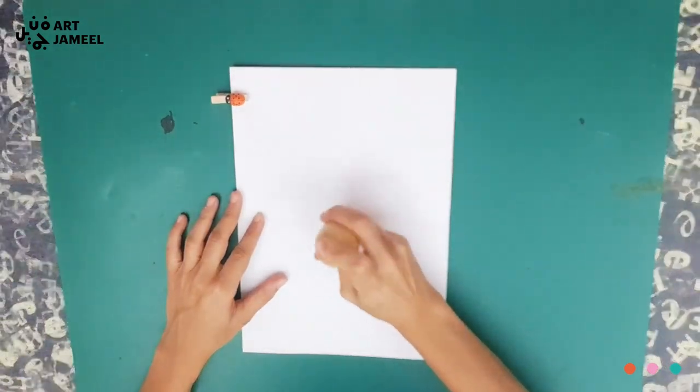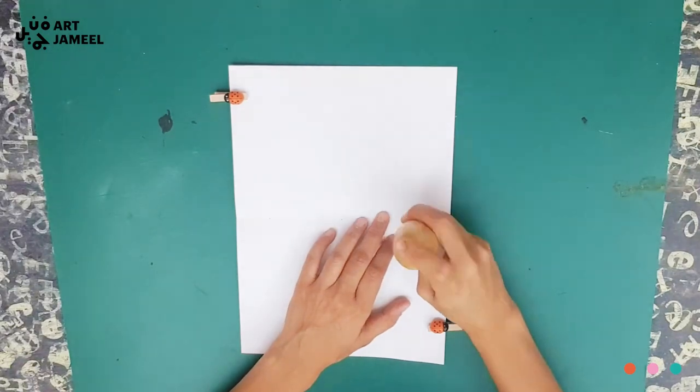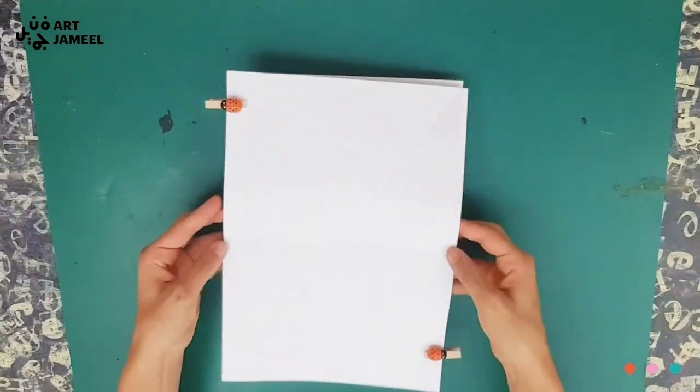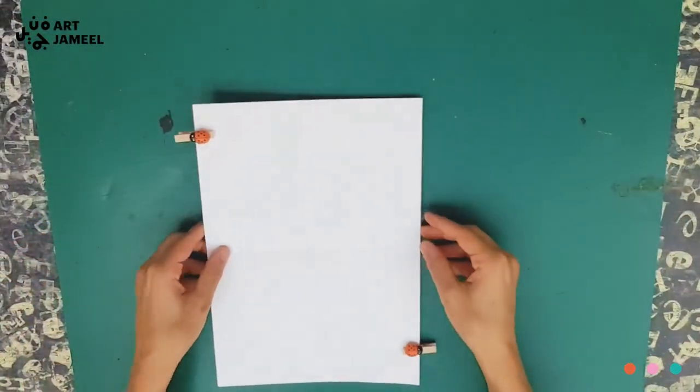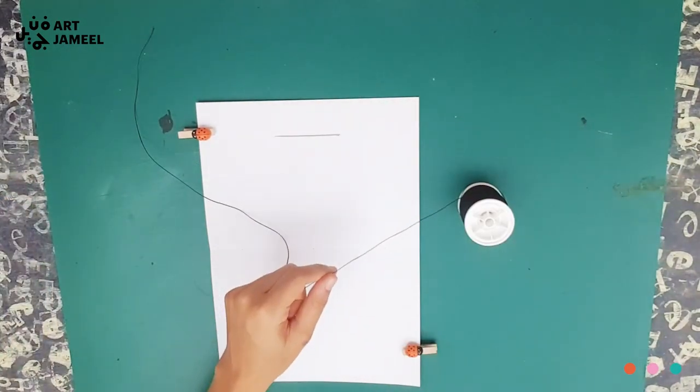Use an awl or any pointy tool to make three holes starting in the middle. Thread your needle and make a knot on the end. This is where I do it a bit differently from the original saddle stitch binding.